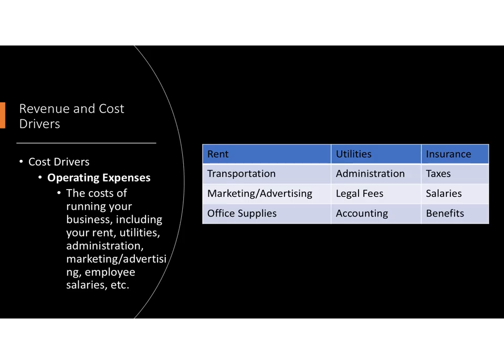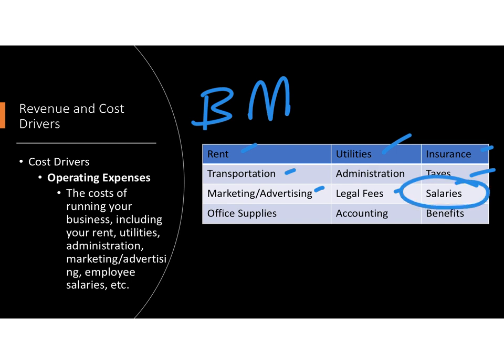Operating expenses are the other cost driver. If I have a brick and mortar location, I have rent, utilities, insurance, transportation, taxes, marketing, advertising, legal, salaries or wages, supplies, accounting, and employee benefits. All of these are examples of operating expenses.